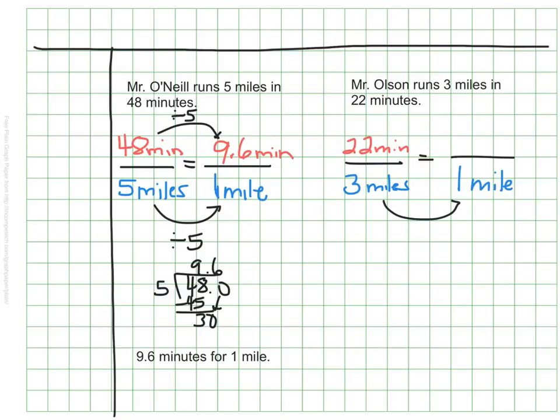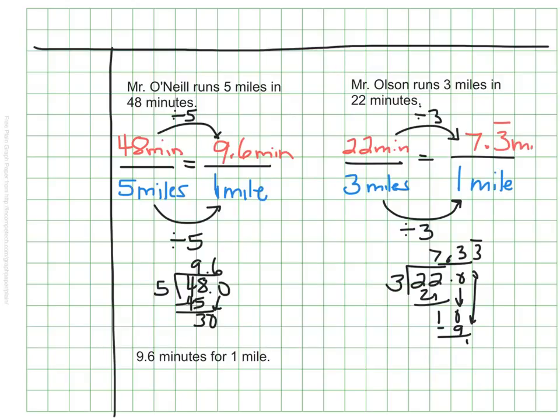And this time, it looks as though I'm dividing 3 by 3 to figure out one mile. So I'll do the same thing to my 22. I'll need to divide 22 by 3 to see how long it takes him to run one mile. From my calculations, I can see that it's going to take Mr. Olson about 7 and a third of a minute, so 7.3 repeating minutes, to run his one mile. That's his unit rate.